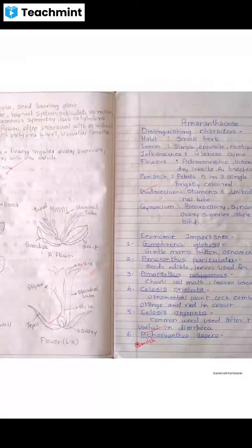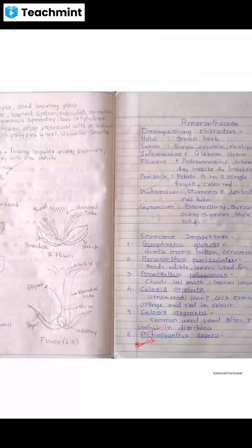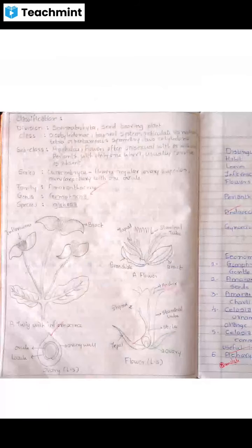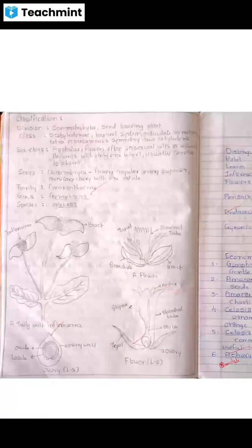Series Curviembryae. Flower regular, ovary superior — note that in Asteraceae we saw inferior ovary. Monocarpellary with one ovule. Family Amaranthaceae. Genus Gomphrena, species globosa.